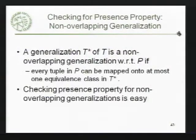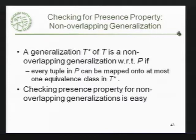So how do we actually check to see delta presence? It turns out it looks kind of difficult to evaluate at first glance, but in certain cases it's fairly easy. What this involves is a non-overlapping generalization. If you can take a data item — a tuple — in that table and map it into at most one equivalence class, where equivalence class is like k-anonymity, if there's at most one group that it matches, then it's fairly easy to check this.